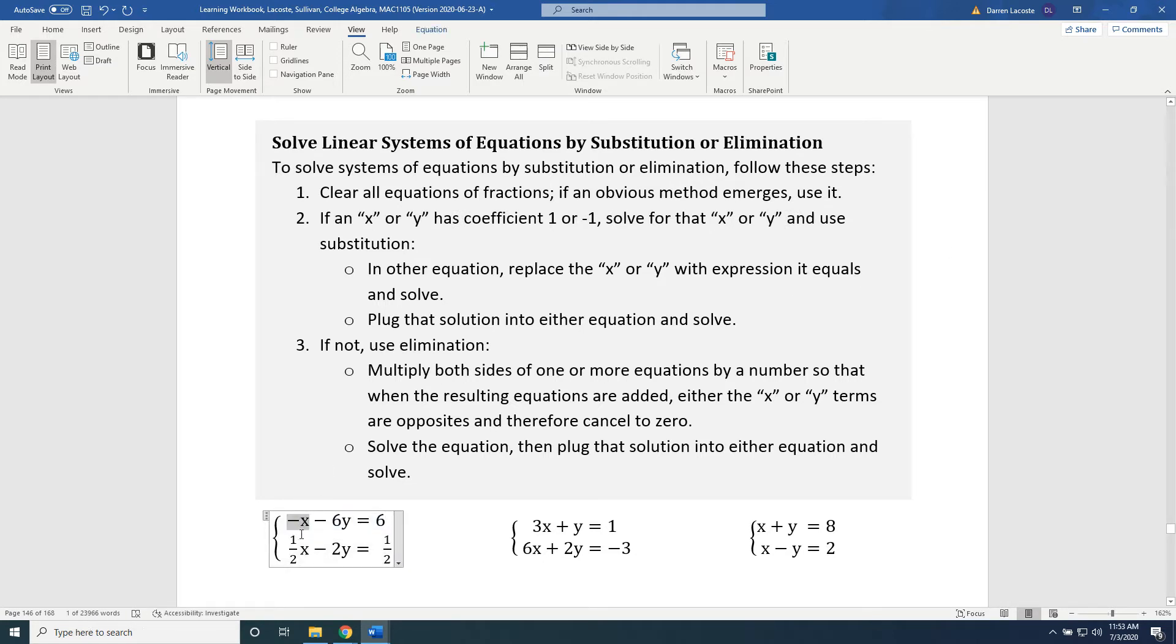This is a term whose coefficient is negative 1. So this is an x with a coefficient of negative 1. This is a y with a coefficient of positive 1. This is an x with a coefficient of positive 1. This is a y with a coefficient of negative 1. If you see any of those four things anywhere in your system,